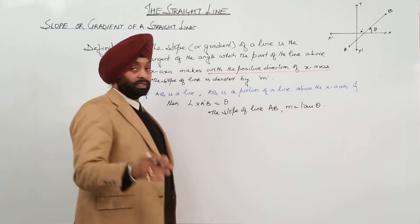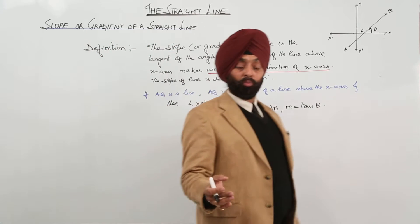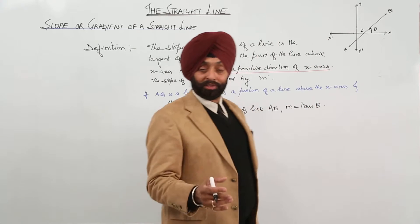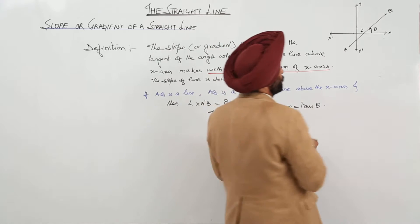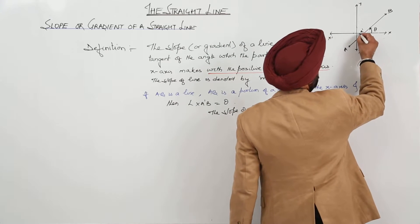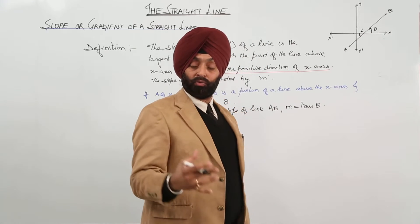Now, there can be a question. You can ask me a question: Sir, what will be the slope of line BA? Will it be the same? Now, just look here. What about this angle? This angle is again theta, because it is vertical opposite angle.